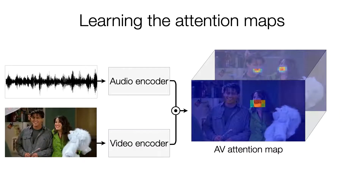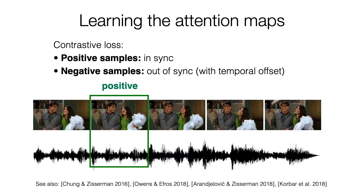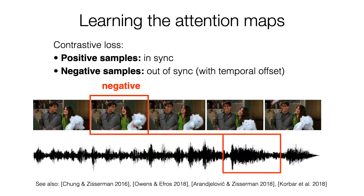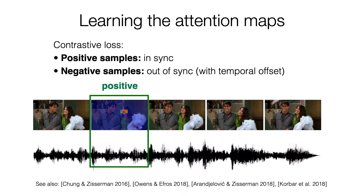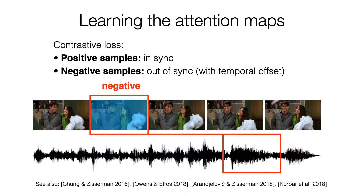Our model groups attention maps into sound sources. To learn these attention maps in a self-supervised way, we use contrastive learning. Following previous work, we obtain positive and negative video-audio pairs, where for the positives the audio and video are temporarily synchronized, while for the negatives they are misaligned. The network generates an attention map for each. The contrastive loss then encourages strong attention response for the positive pairs and reduces the response for the negatives.